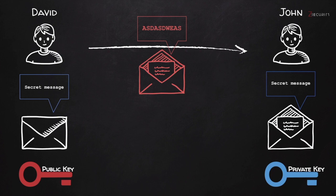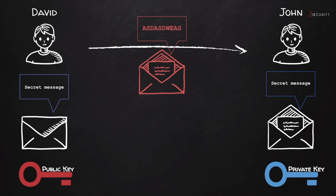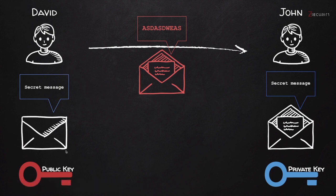So far we learned how to use PGP to encrypt messages so that only the receiver can read the content of the message. To do that, the sender — David in our example — uses the public key of the receiver. The receiver makes their public key public, because the public key cannot be used to decrypt messages; it can only be used to encrypt messages. So David encrypts the message with John's public key, and when John receives it, he uses his own private key — that he never shares with anybody — to decrypt the message.